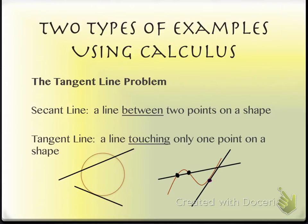A tangent line could actually touch the curve in more than one spot. For example, if I drew a tangent line at a point, it would eventually cross the curve again elsewhere. But we're actually talking about doing it at a very specific place where it's not cutting through the curve at a sharp angle — it's doing it in a very subtle way. We'll talk more about how we create those later.